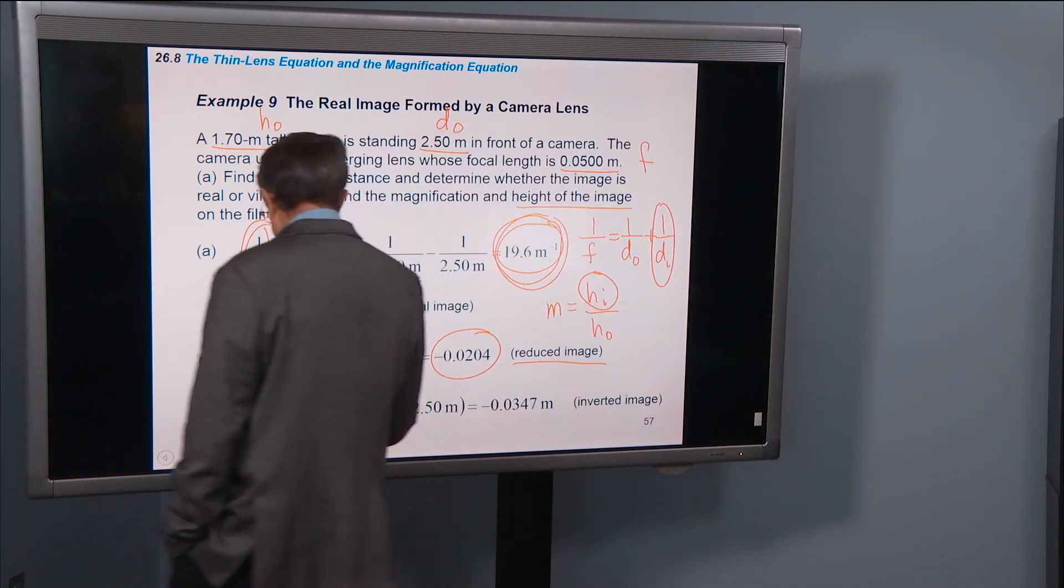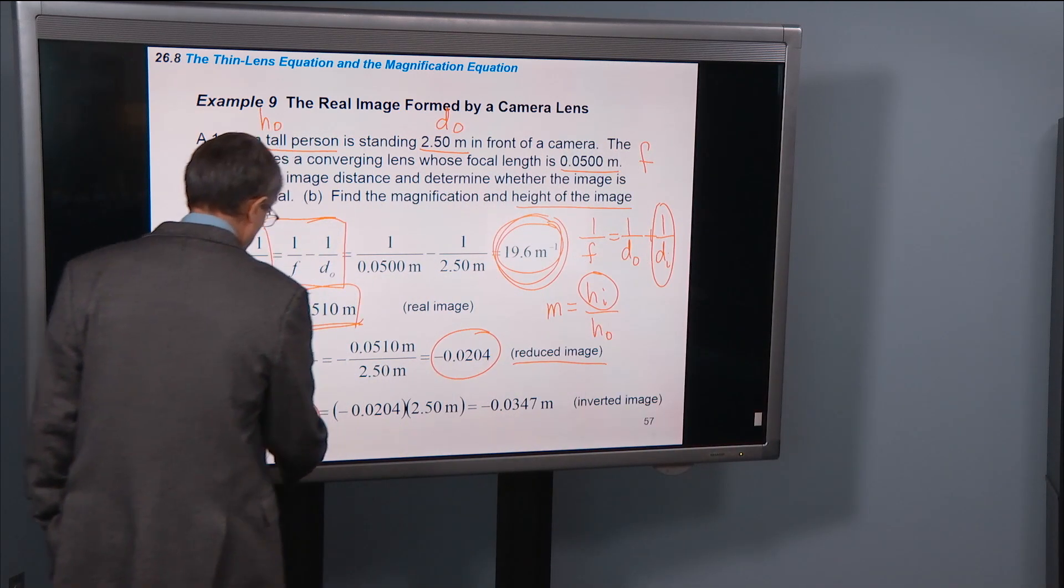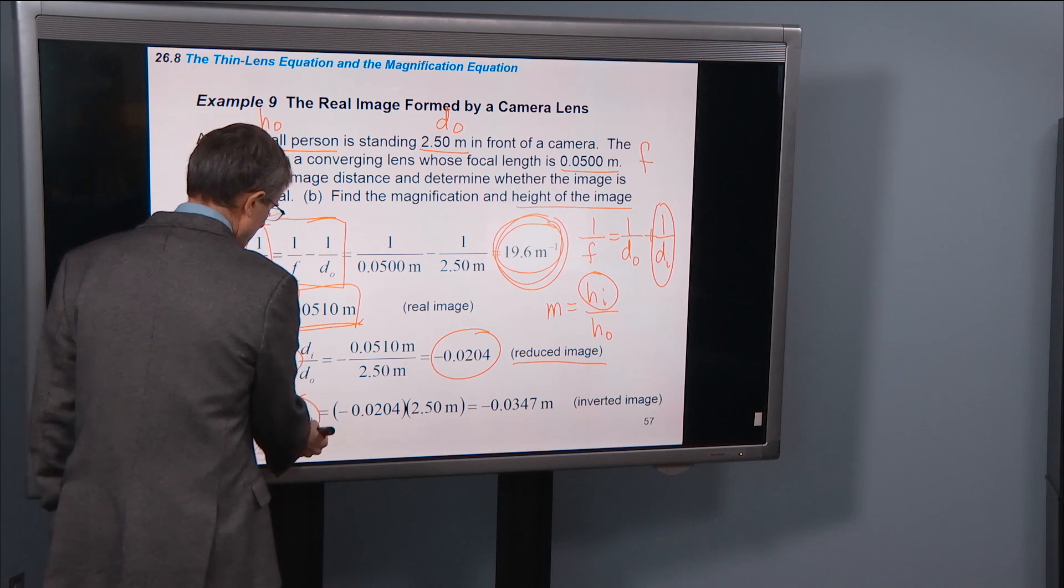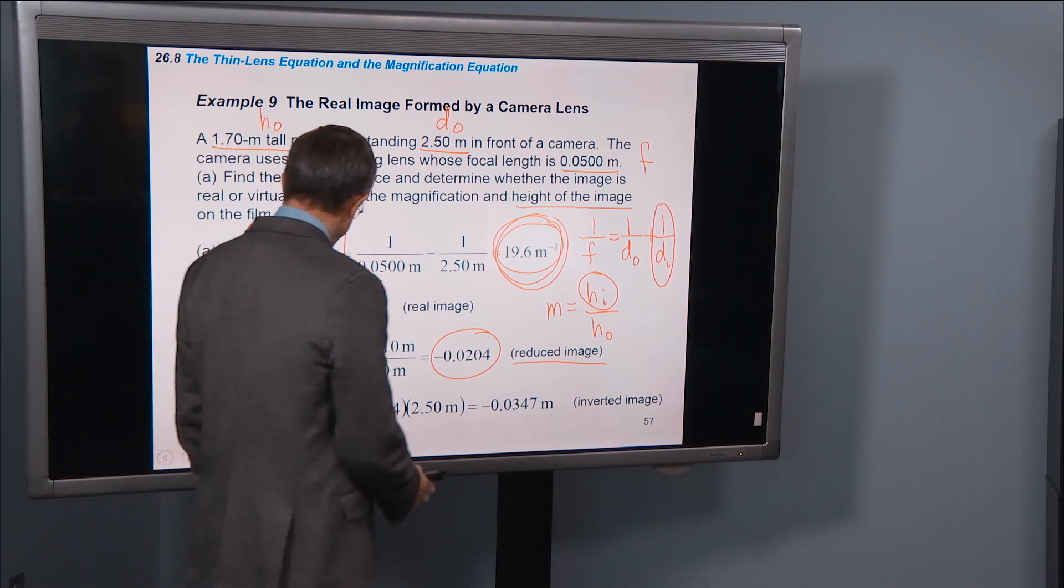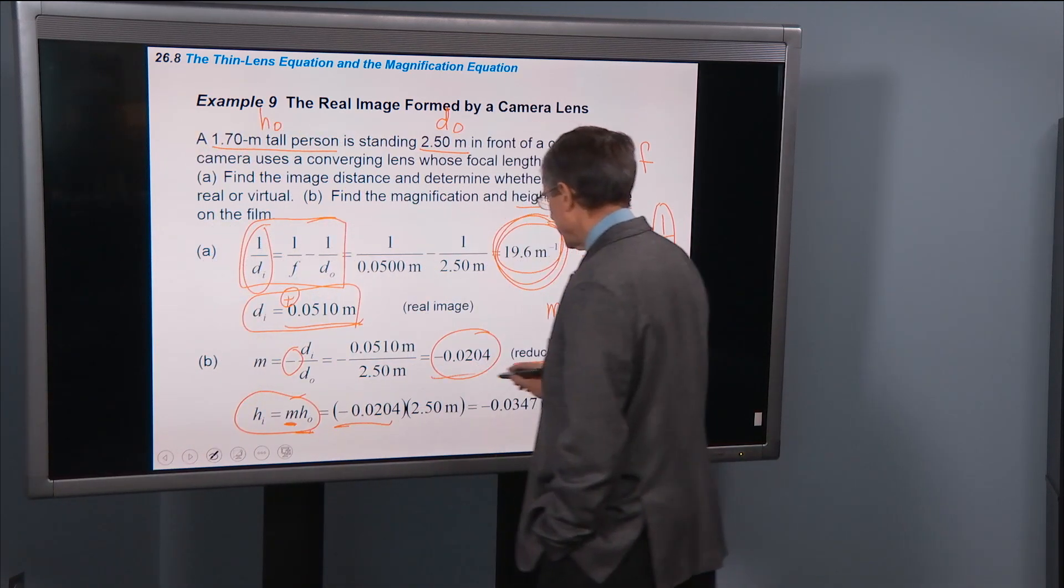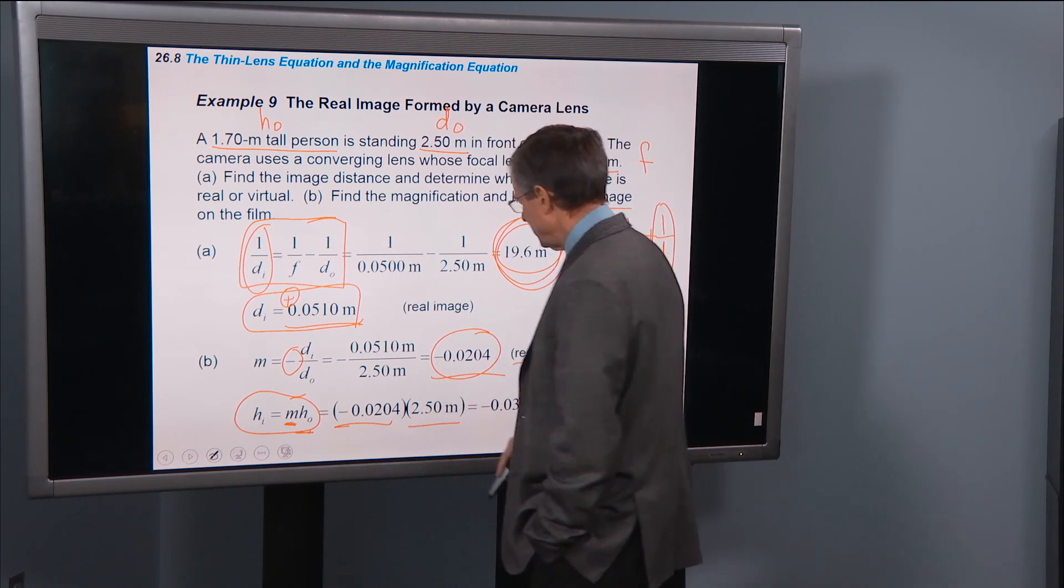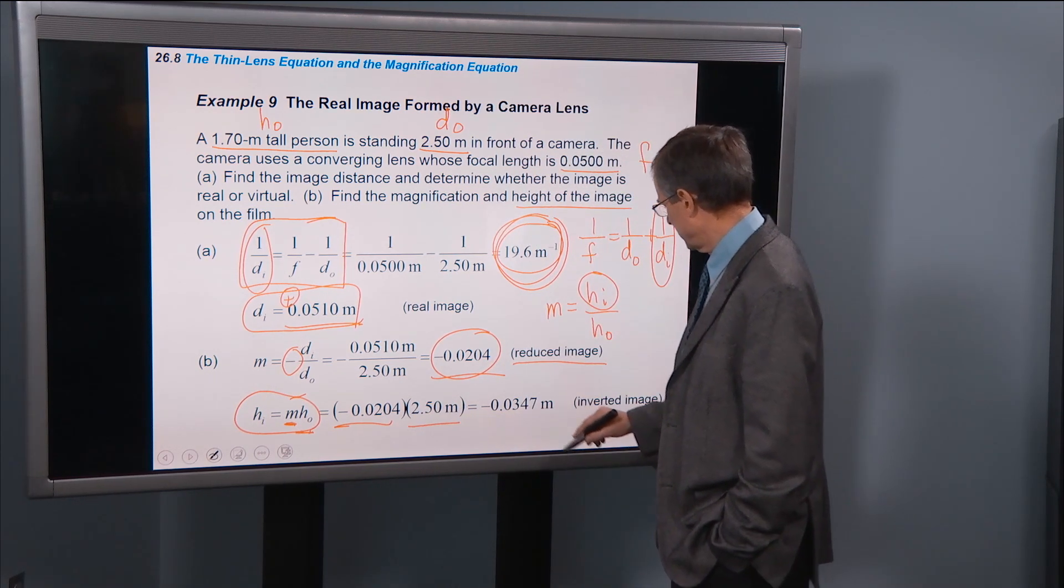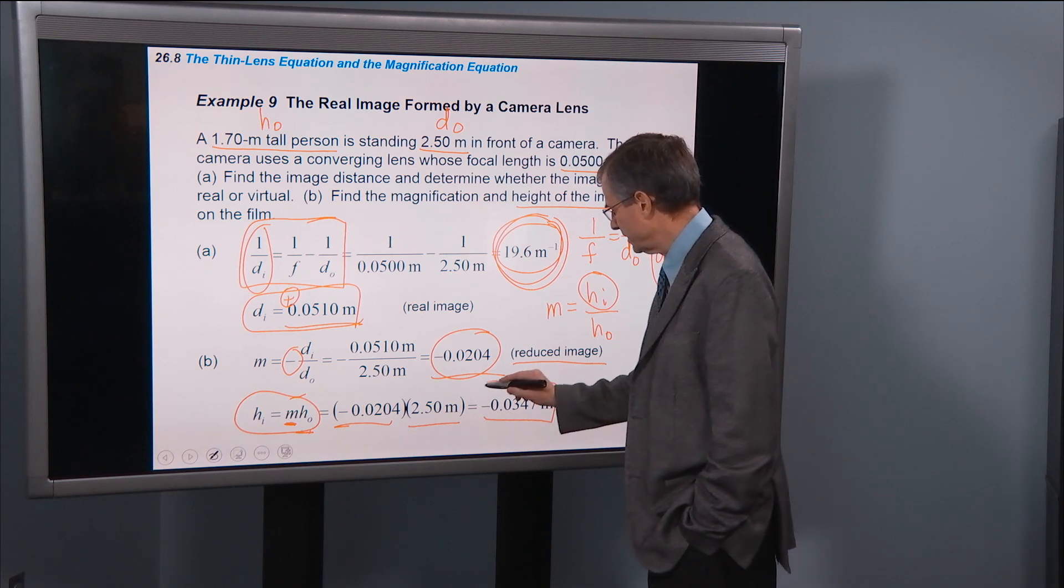That gives me, the height of the image is magnification times H0. Magnification, we just calculated, it's right here, times the height of the object gives the height of the image.